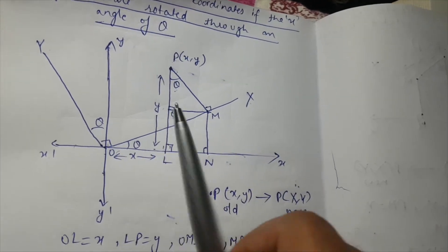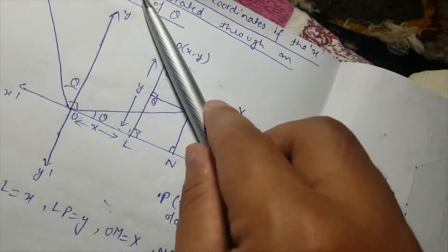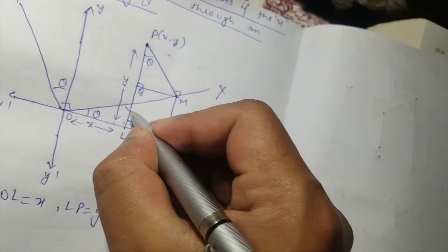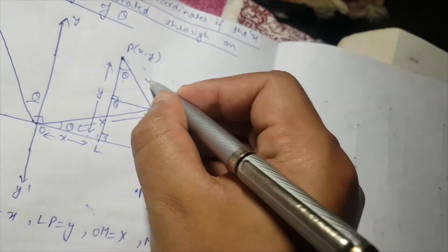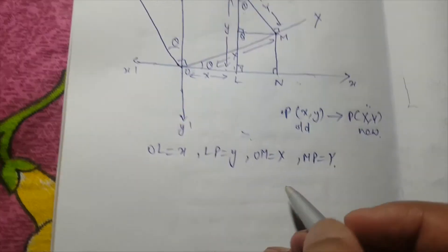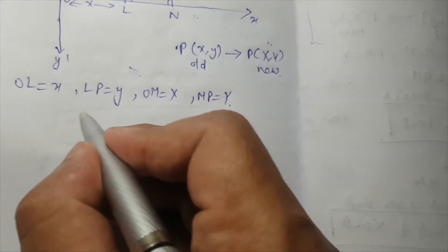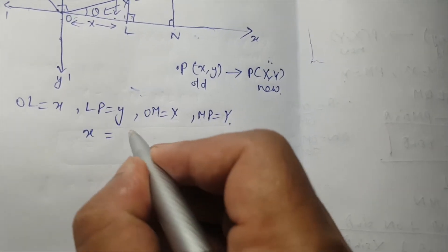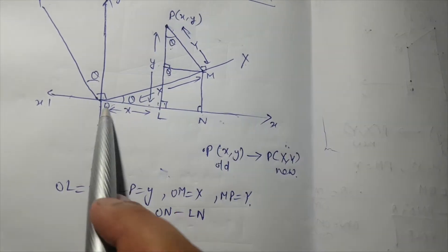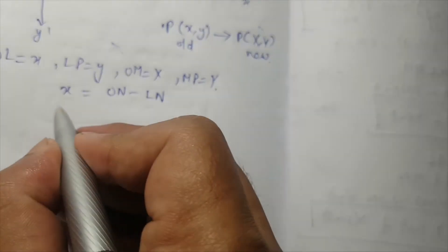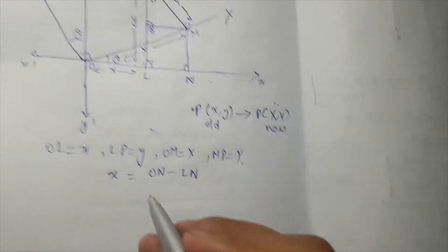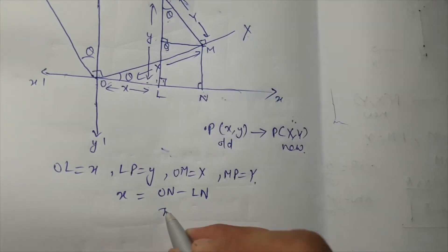Our new axis gives us X and Y. From the figure we can see that capital X will be ON minus LN — that is, this length minus this length.